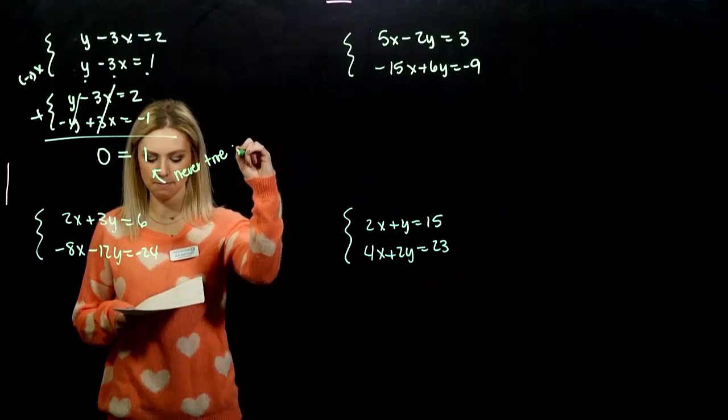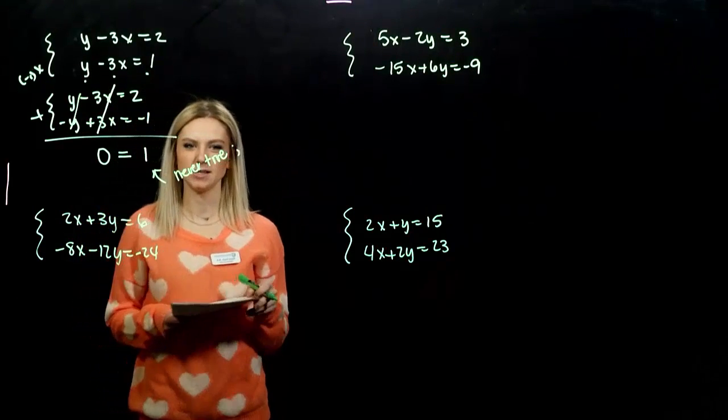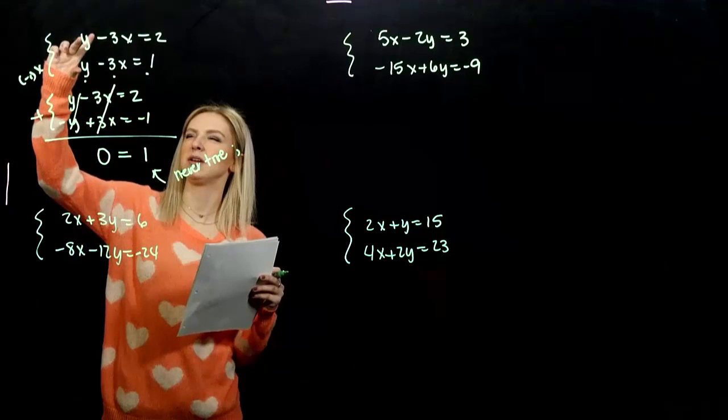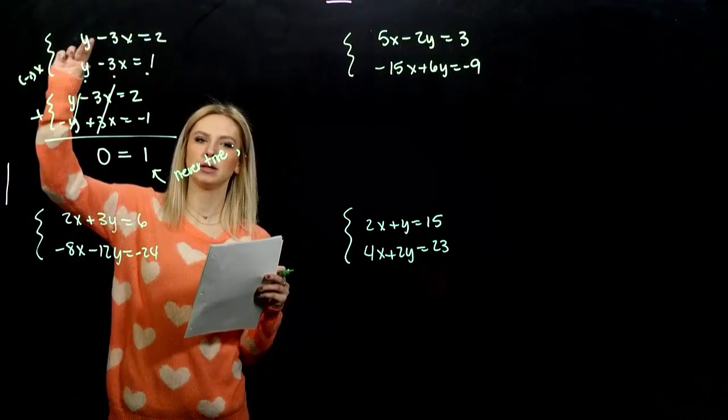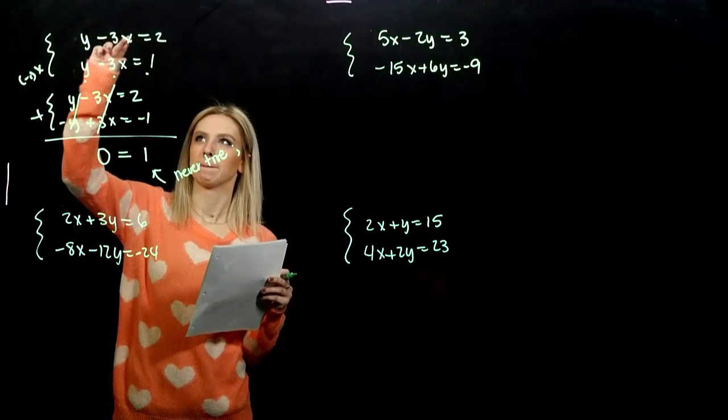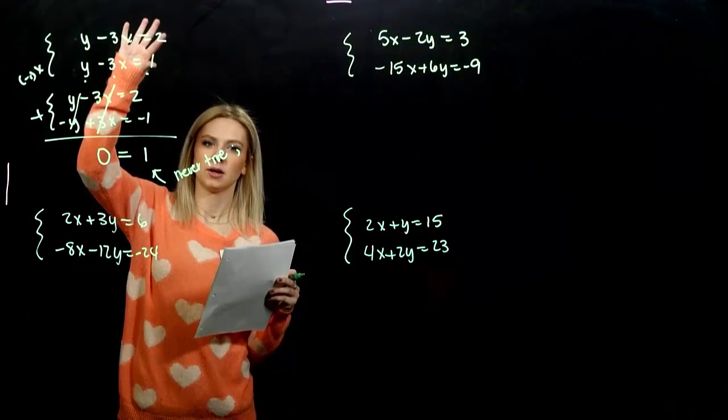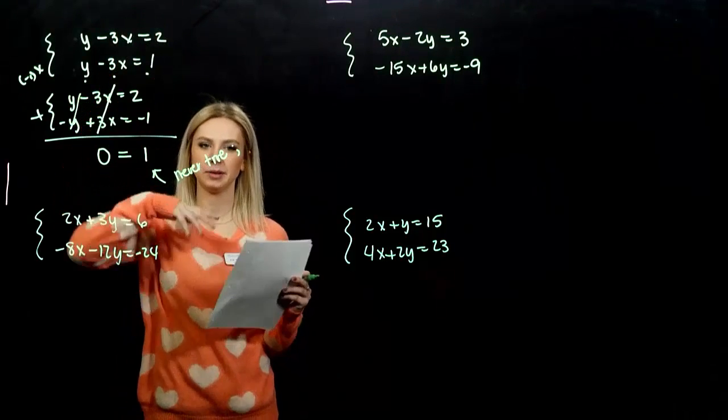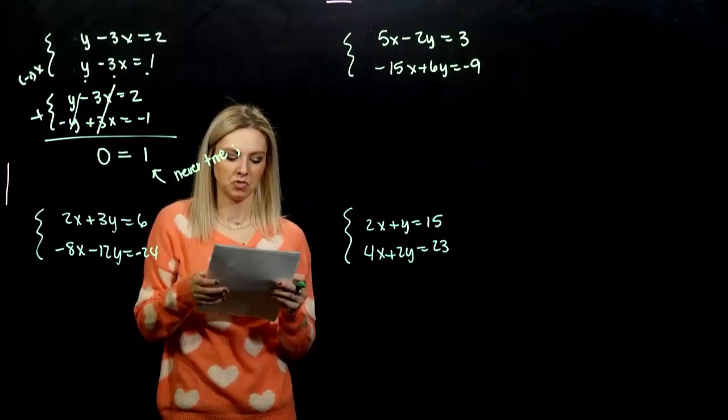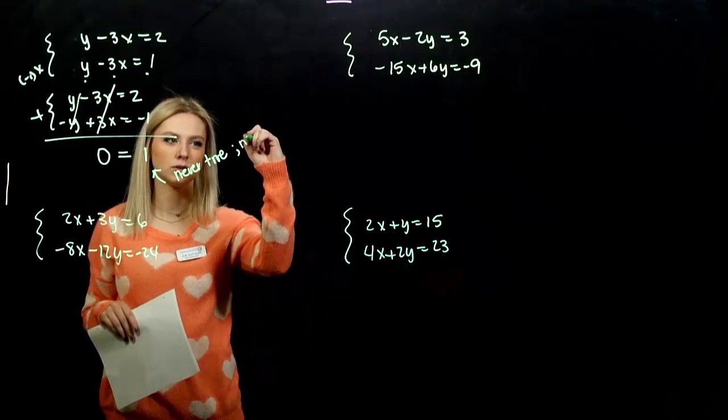So, what does that mean? Is there a solution to this system? Can I ever make the same lines that have different values on the right be equal to each other? No, not going to happen. So, this is no solution.